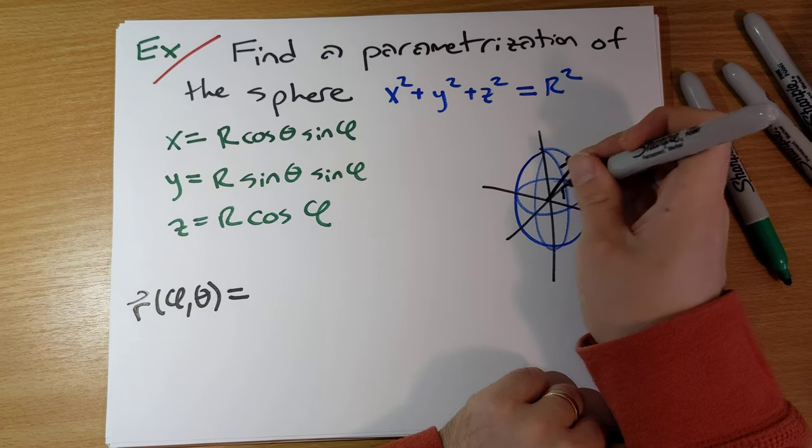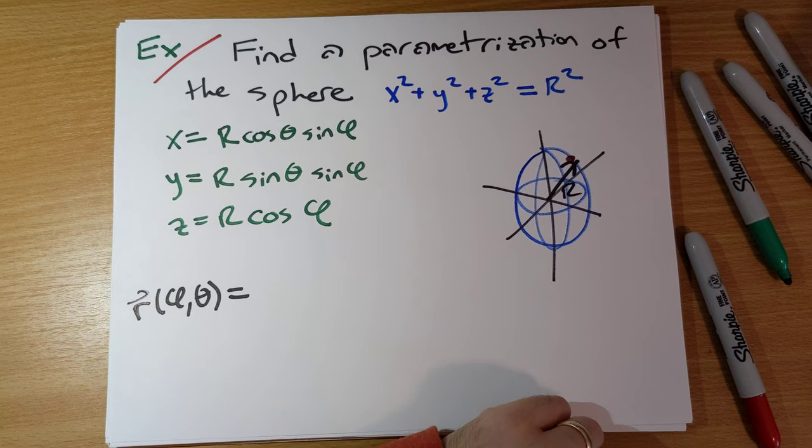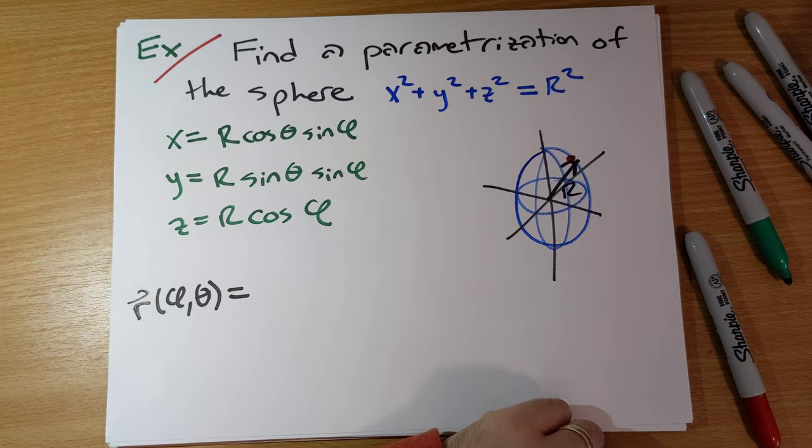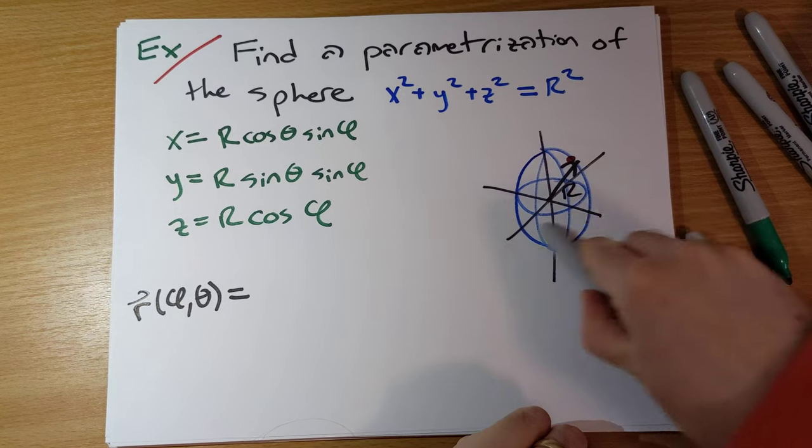All the points on the surface of the sphere are at distance exactly R away from the origin. R is not allowed to change here. The only thing that can change are phi and theta.